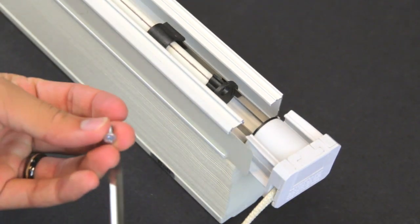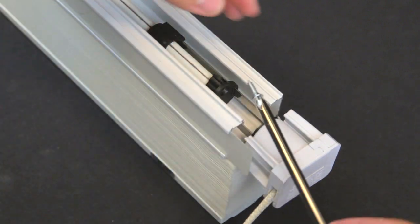Replace the retainer screw, then insert the assembly all the way into the headrail until it is seated.